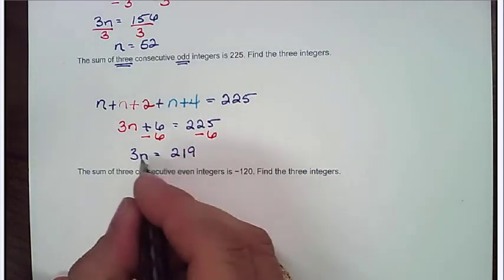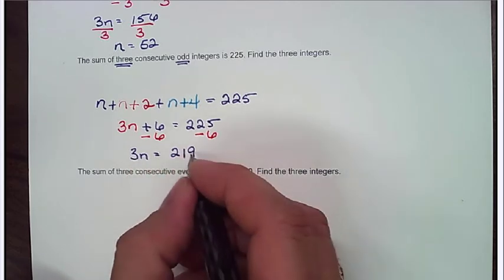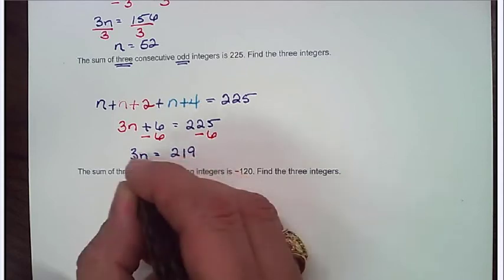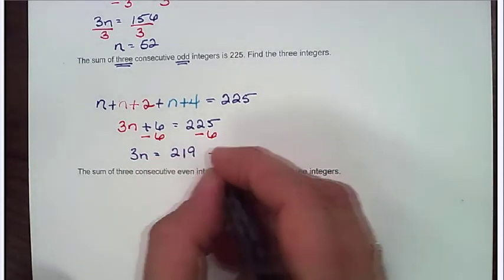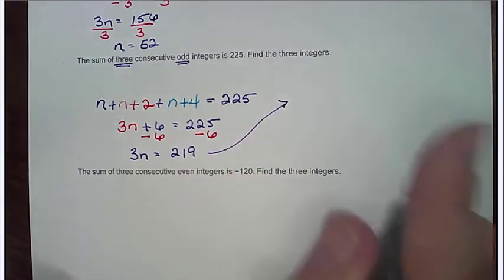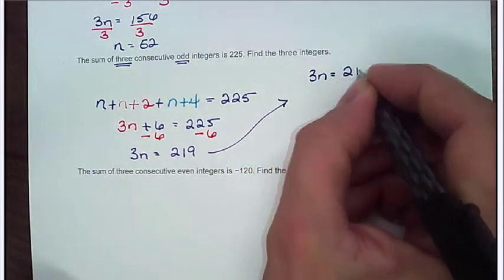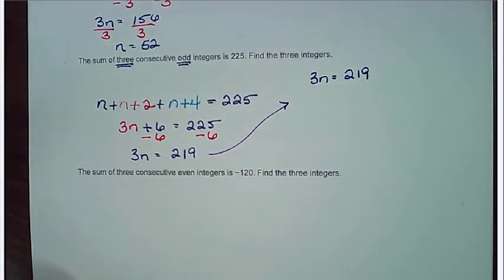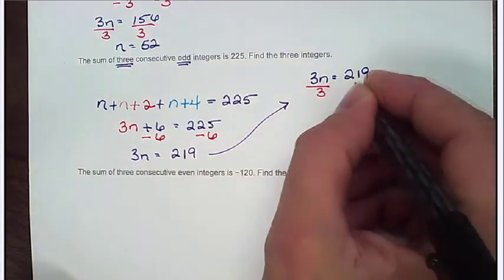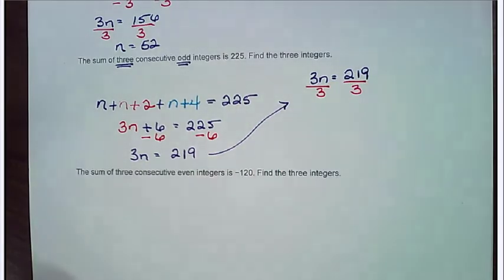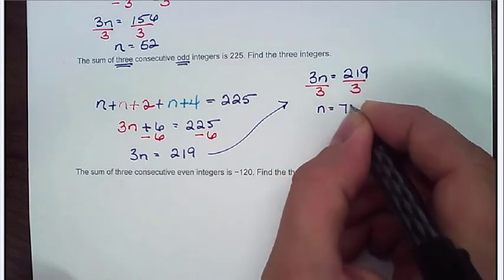Now, I know 3 is going to divide this, a little extra tidbit. I know 3 divides this because 9 plus 1 gives me 10. 10 plus 2 gives me 12. And I know 3 divides 12. So I know it's going to divide evenly. So going ahead and doing this division, I get 3n is equal to 219. Divided by 3 gives me that n is actually equal to 73.